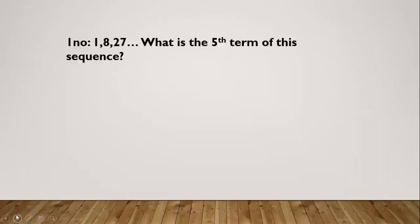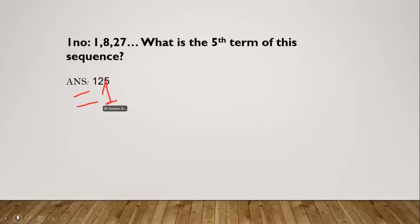Our first question is: 1, 8, 27, dot dot dot — what is the fifth term of this sequence? We have to use the cube idea to solve this. One cubed equals 1, two cubed equals 8, three cubed equals 27, four cubed equals 64, and five cubed equals 125. So 125 is the fifth term. Our answer is 125.